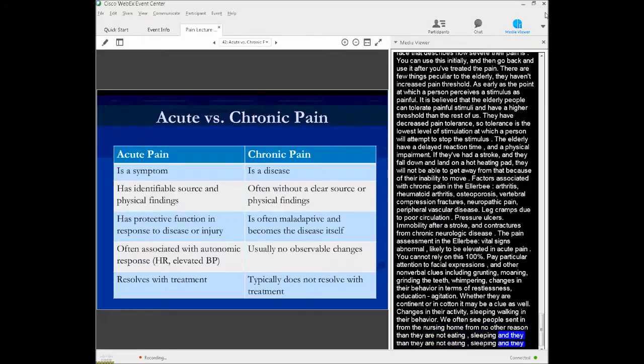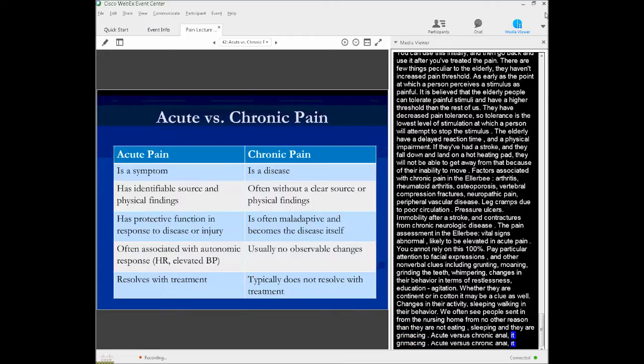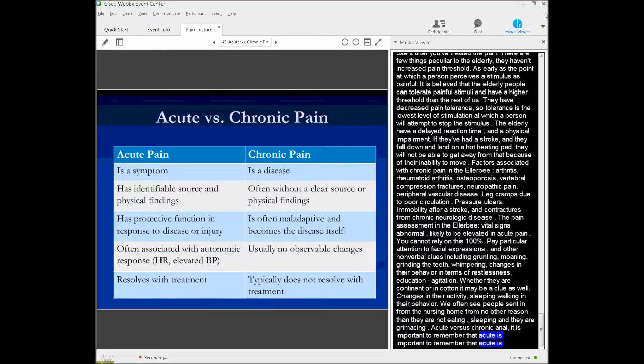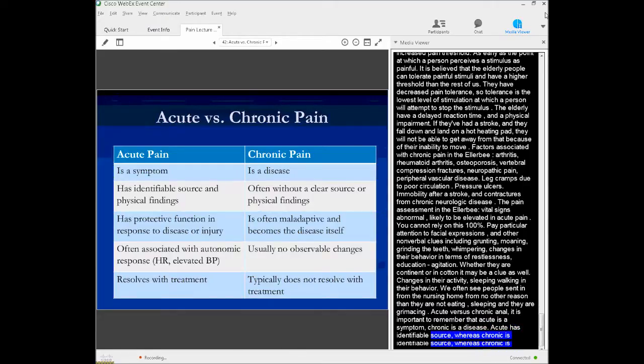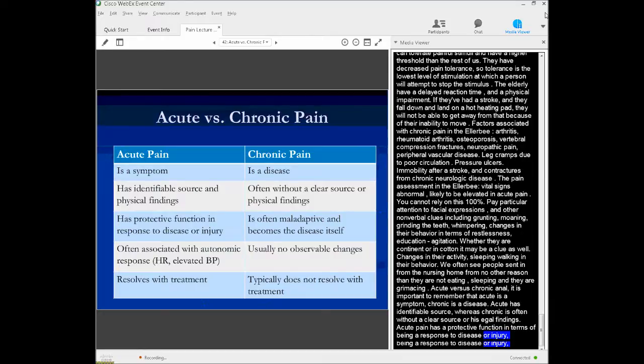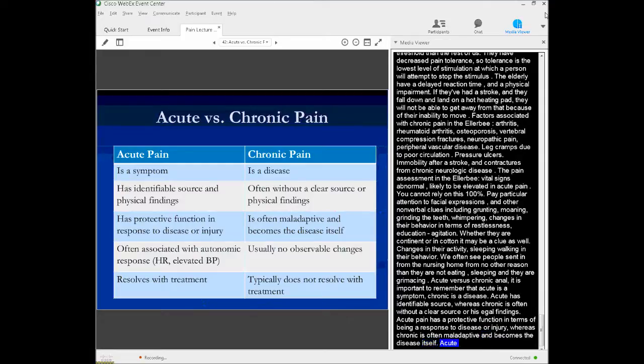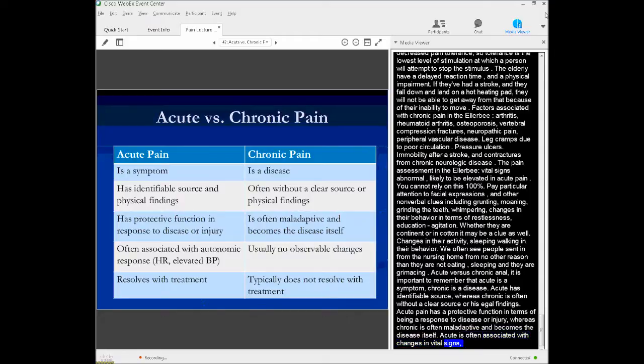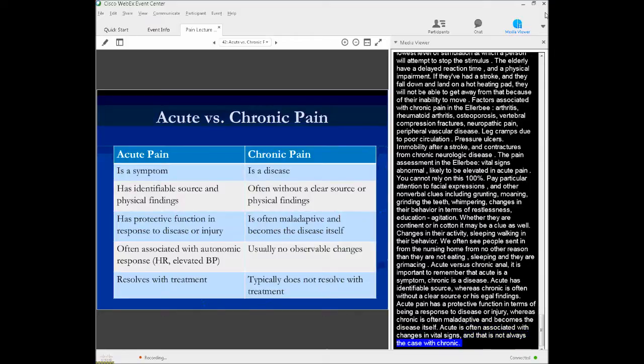Acute versus chronic pain. It's important to remember that acute pain is a symptom, whereas chronic pain is a disease. Acute pain typically has an identifiable source and physical findings to go along with, whereas chronic pain is often without a clear source or physical findings. Acute pain has a protective function, including being a response to a disease or injury, whereas chronic pain is often maladaptive and becomes the disease itself. Acute pain is often associated with changes in vital signs, which is not always the case with chronic pain. Acute pain ideally will resolve with treatment and chronic pain, it's just basically something that has to be managed and typically does not go away.